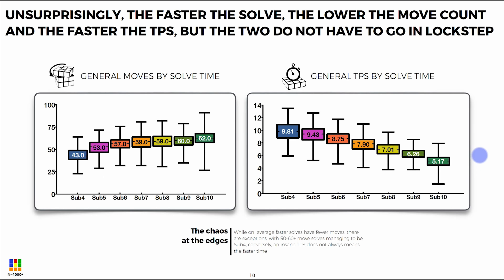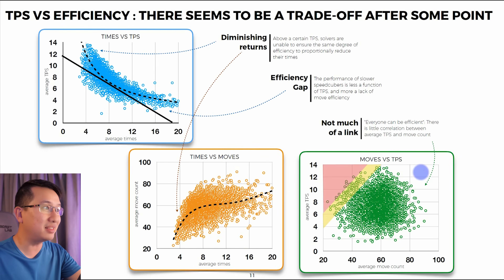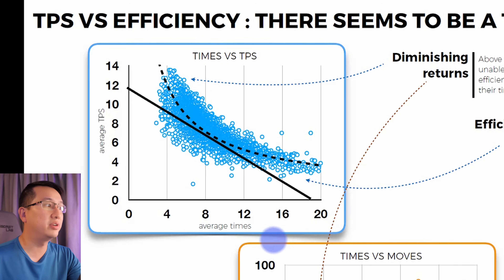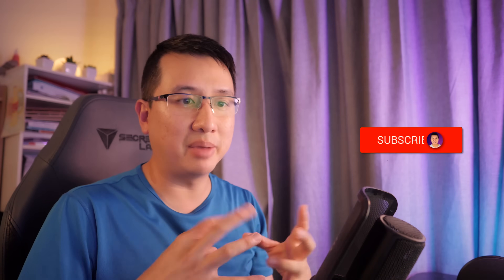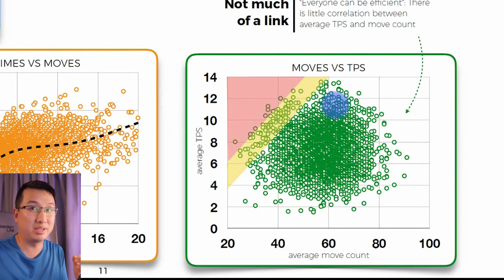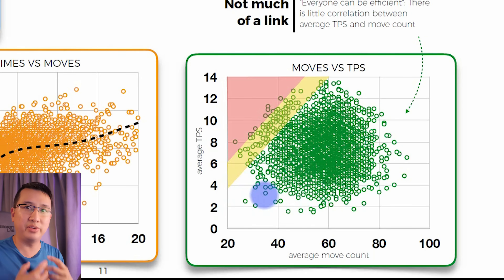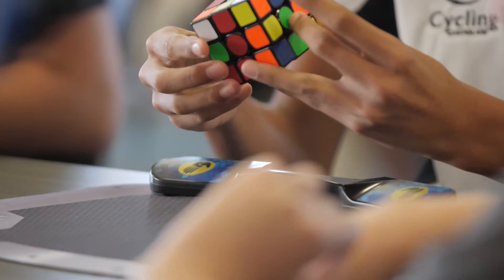Let's get into Chapter 1: the overall solves. The first thing they found is that the faster the solve, the fewer moves were required and the faster the TPS. But check this out — if you look at the blue graph, there's a point of diminishing returns. Above a certain TPS, your times don't seem to improve anymore. And if you look at the green graph, people with high TPS weren't necessarily the most efficient. Some people turning at only 6, 4, or 2 turns per second were getting really low move counts. Have you, like me, been trading turn speed for efficiency?